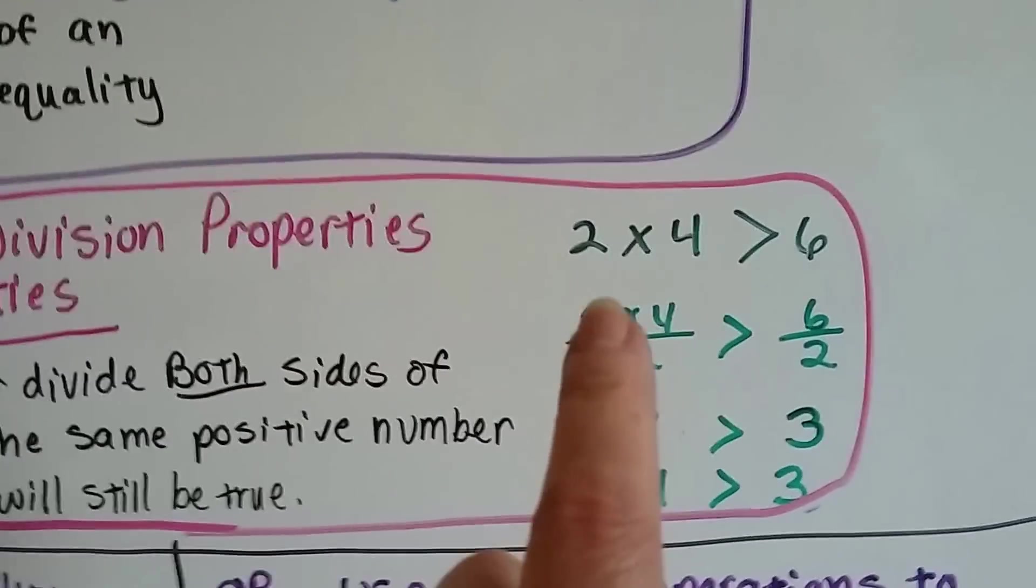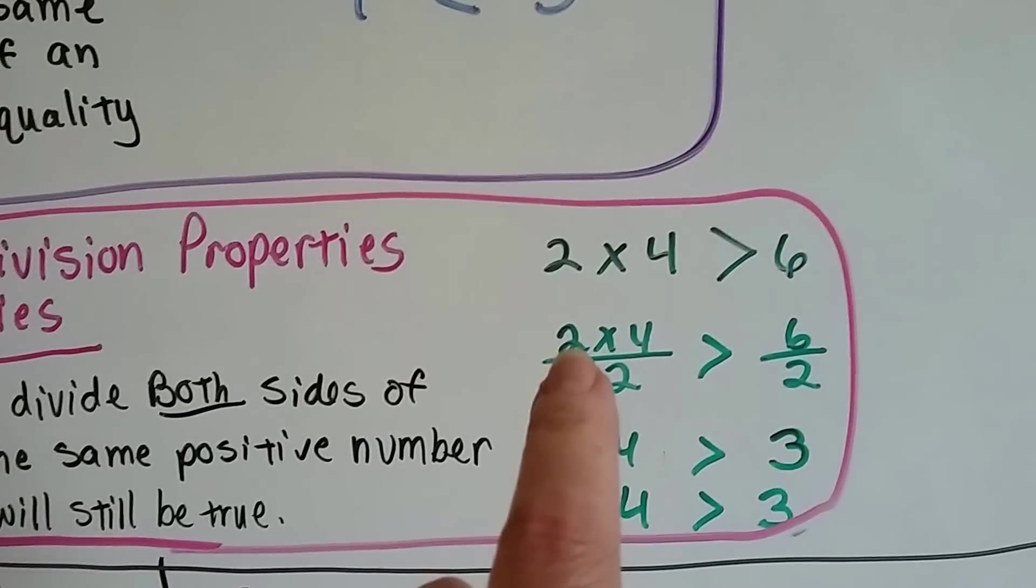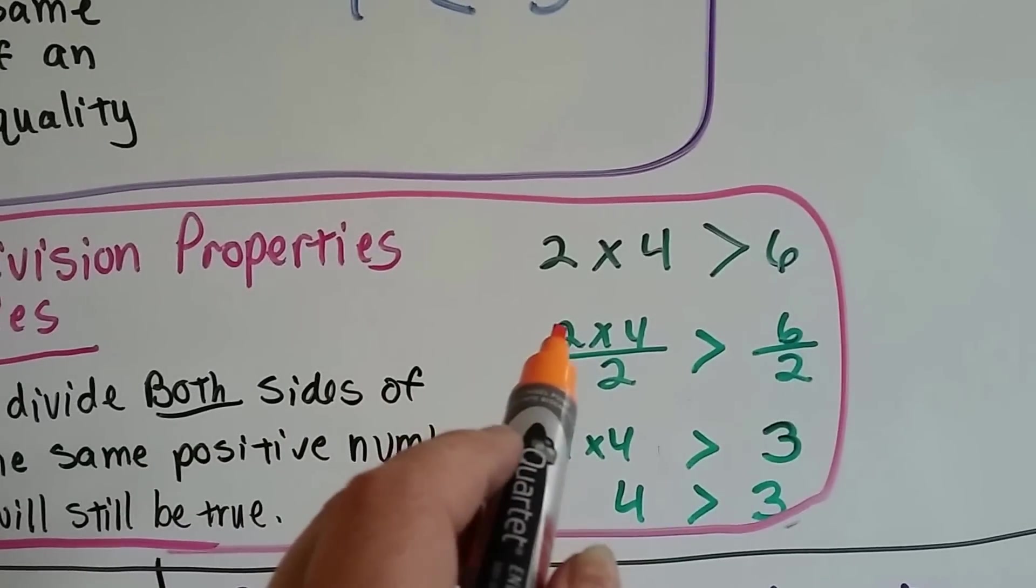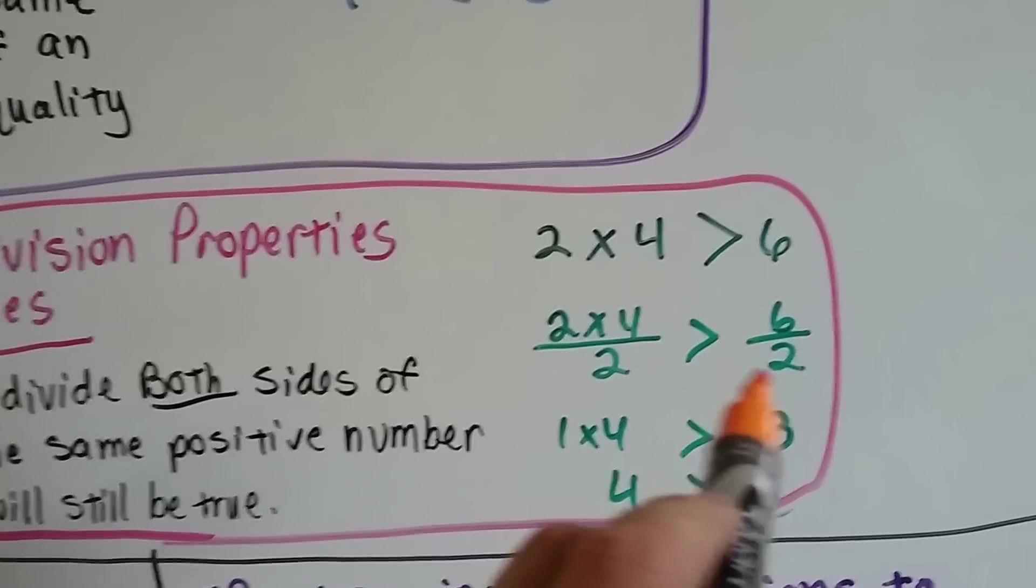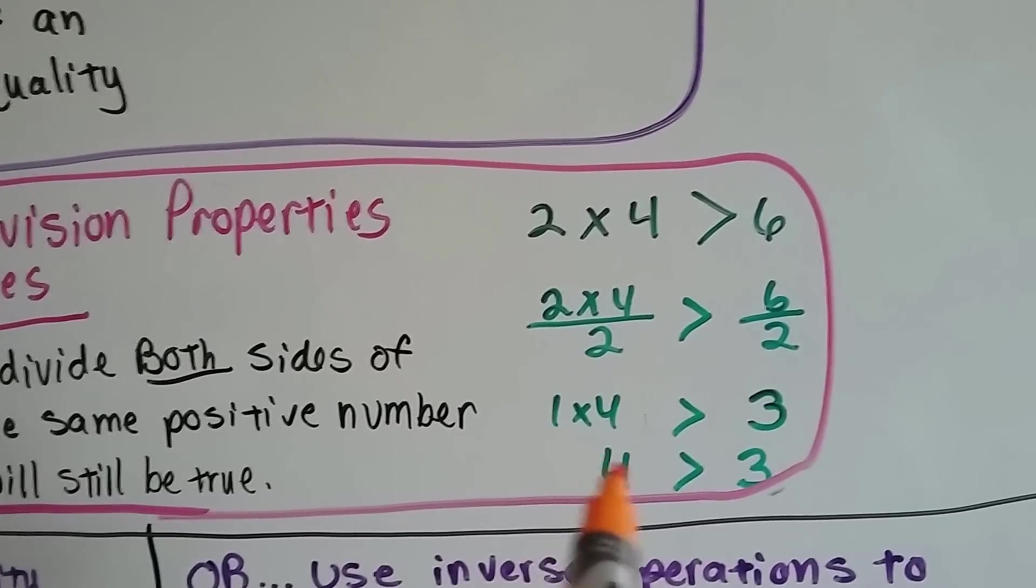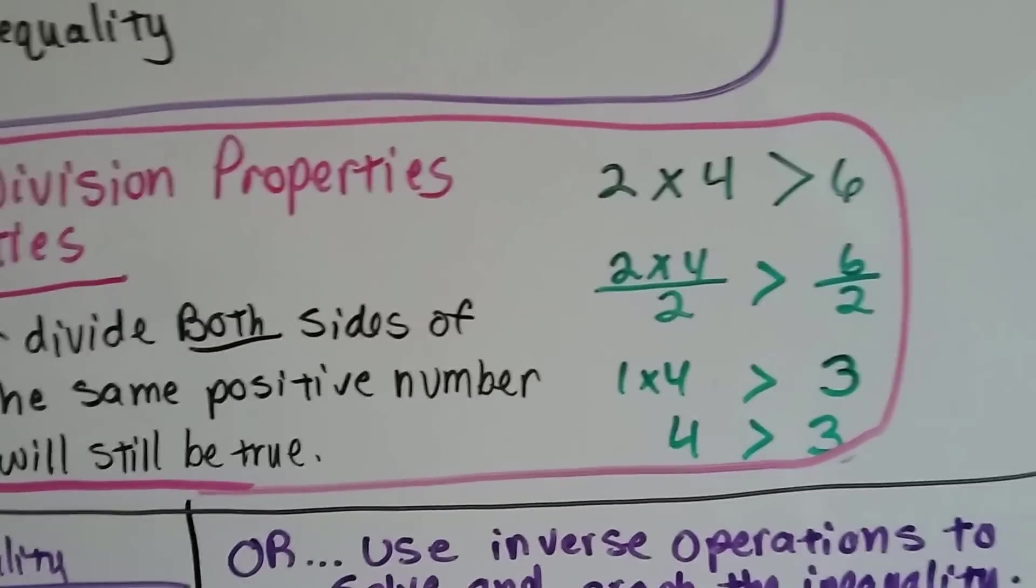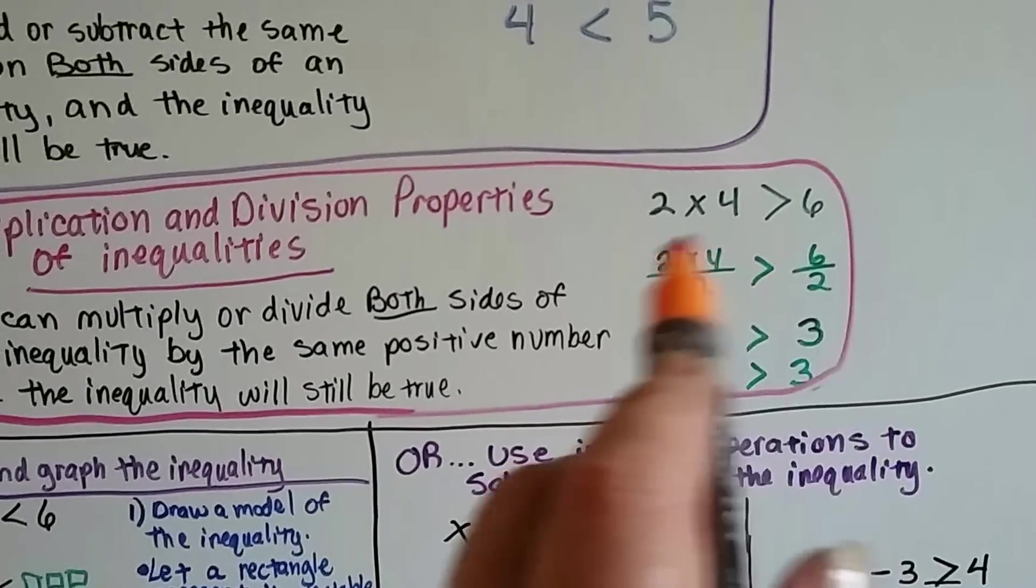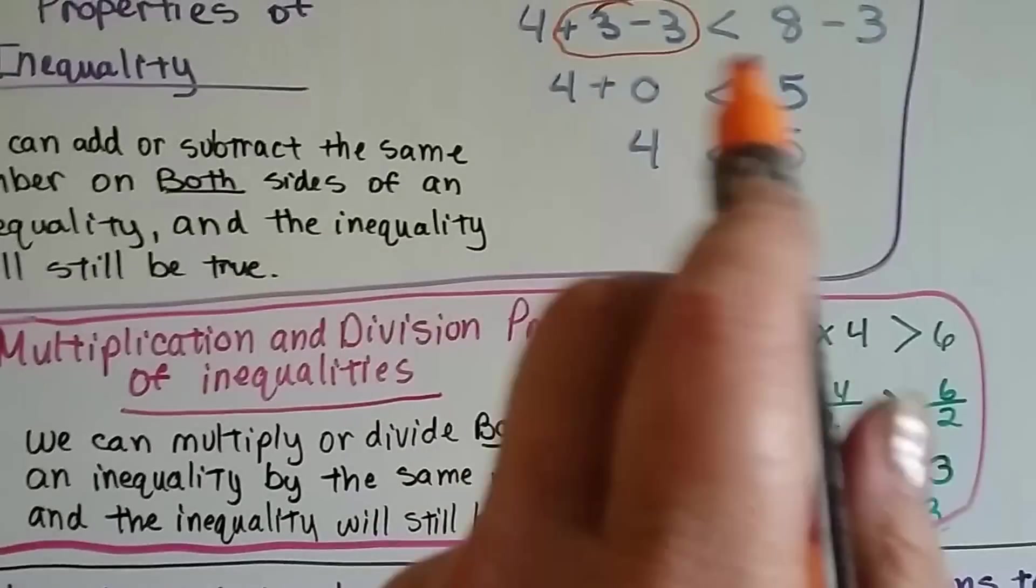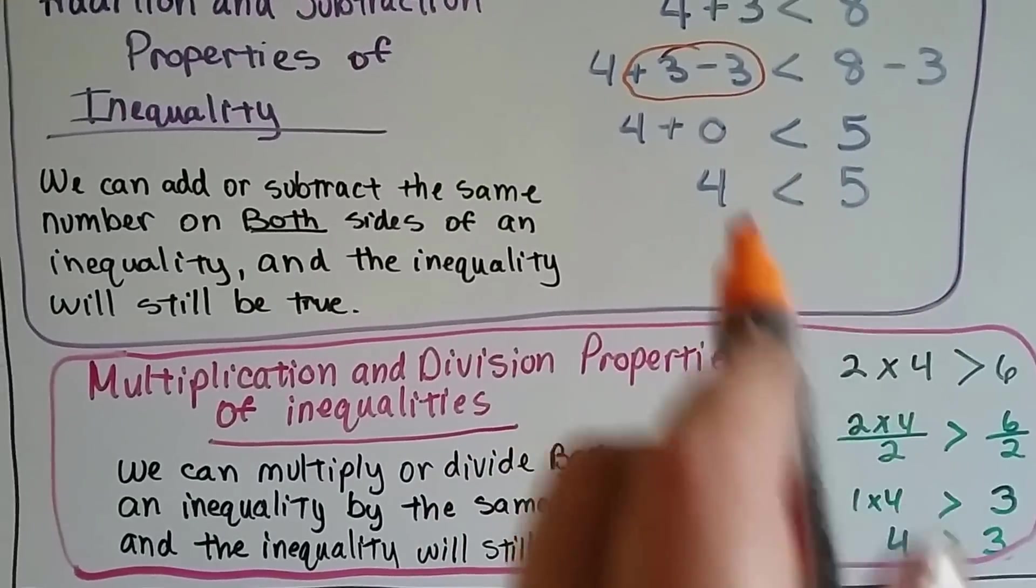So here's what happens. If we have 2 times 4 is 8, we know that's greater than 6. We know that if we divide both sides by 2, 8 divided by 2 is 4, and 6 divided by 2 is 3. So we divided both sides by 2, and it's still true. 4 is still bigger than 3, just like 8 is bigger than 6. So we can multiply or divide the same thing to each side, and it'll still end up becoming true. We can add or subtract the same thing to either side, and it'll still be true.